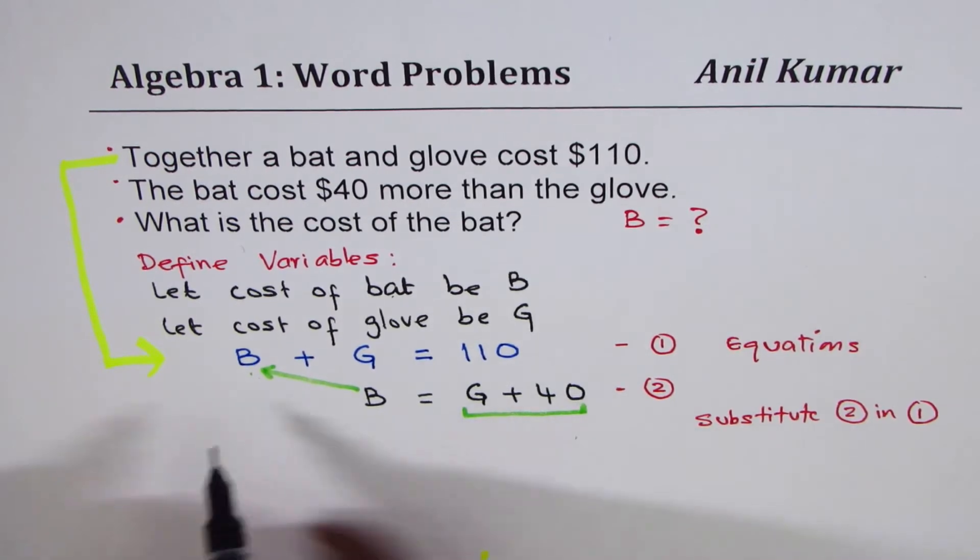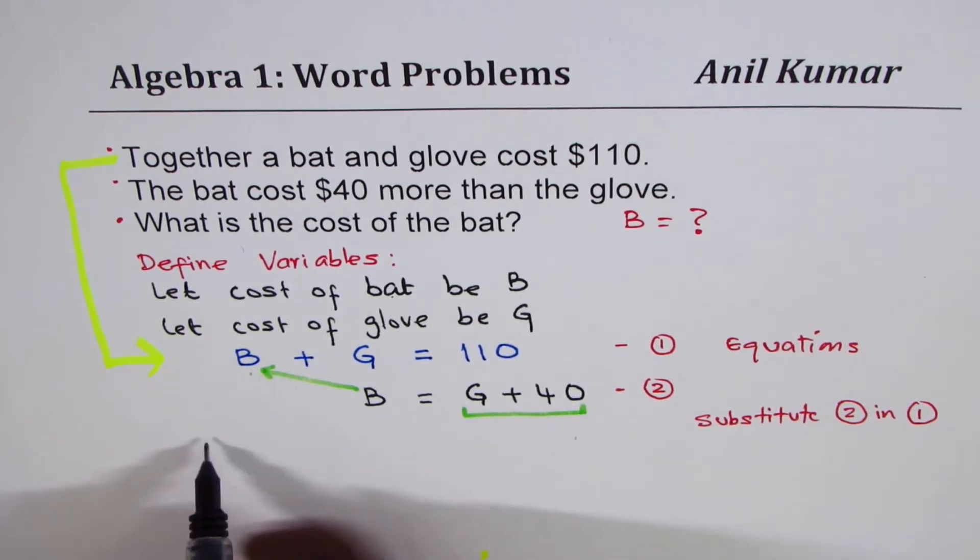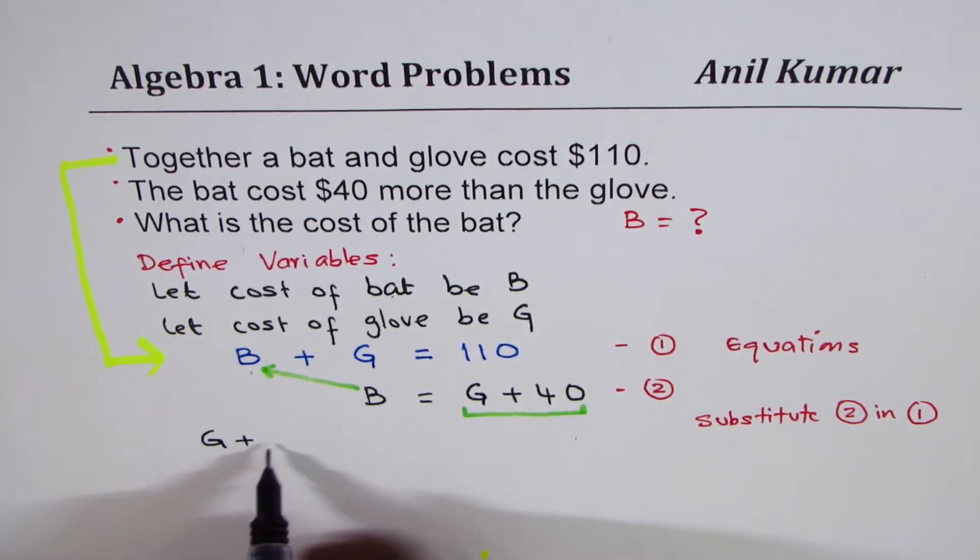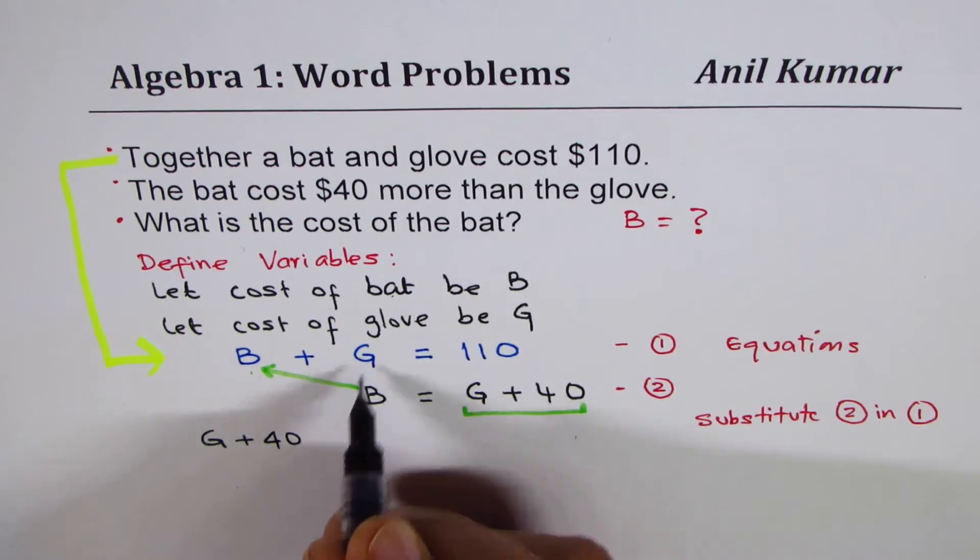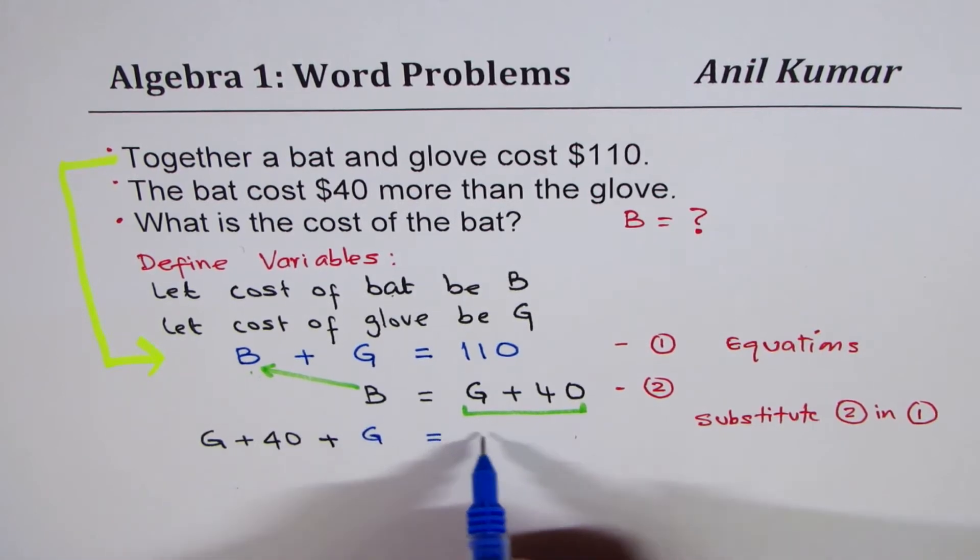So, we'll do that. So, we get in our equation, instead of B, I'm writing G plus 40. So, I'm writing G plus 40 and we already have a G here. So, the rest of the things, let me write them in blue which are already there. G equals to 110.